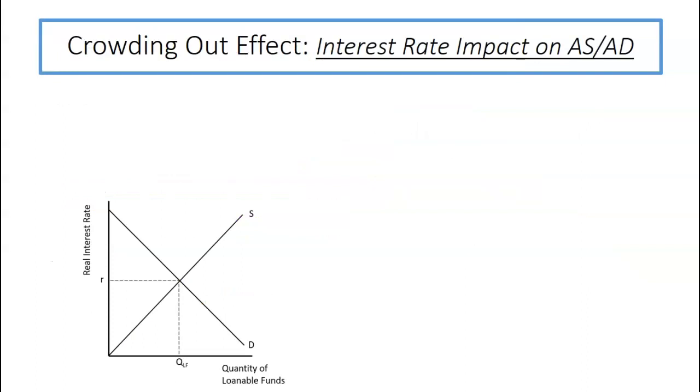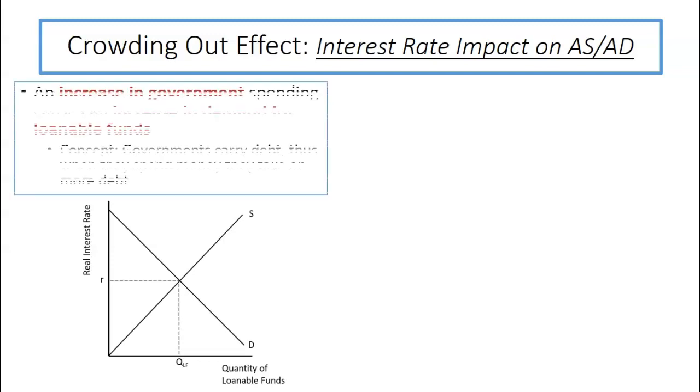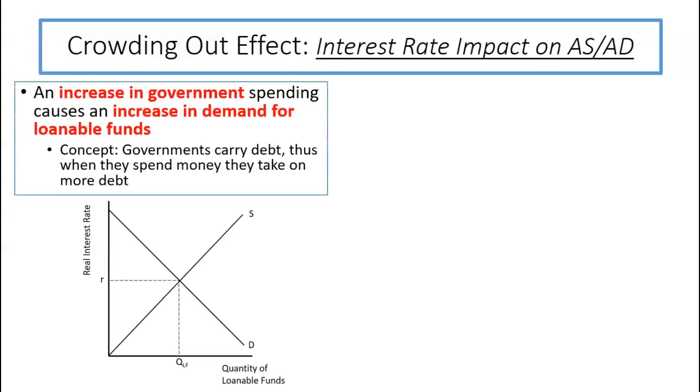So what this is referring to is an idea called the crowding out effect which College Board loves to ask about. So we have our loanable funds graph and we have to make a little statement here. If there's an increase in government spending that's going to cause an increase in demand for loanable funds.